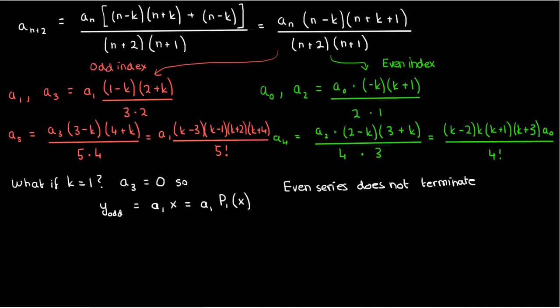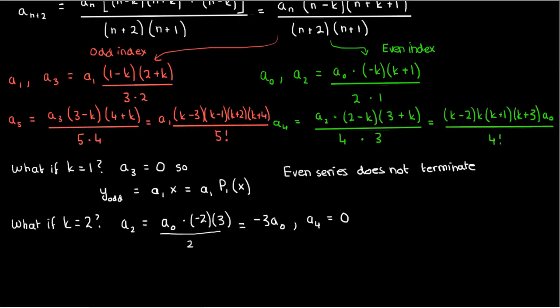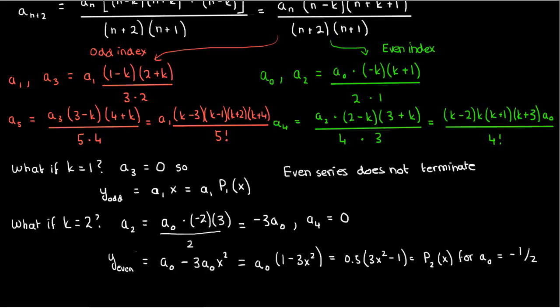For k equals 2, a₂ becomes negative 3a₀ and a₄ becomes 0 due to the k minus 2 term, so the even series terminates. The even solution is y_even equals a₀ times (1 minus 3x²), which becomes (1/2)(3x² minus 1) when a₀ equals negative 1/2. I'll label this as P₂(x). For k equals 2, the odd-numbered coefficients don't terminate, so that series keeps going.